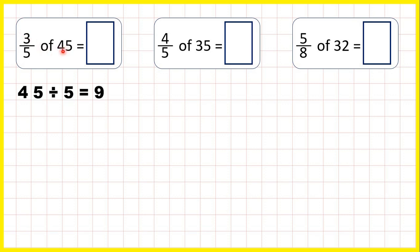We start with 45 divided by 5, dividing by the denominator, which gives us 9. Then we take that 9 and times top, or multiply by the numerator, and 9 times 3 is 27. So 3 fifths of 45 is 27.